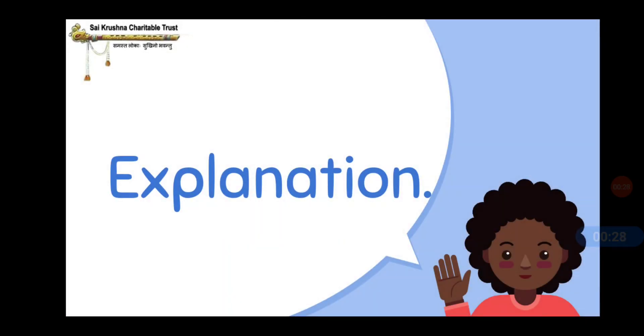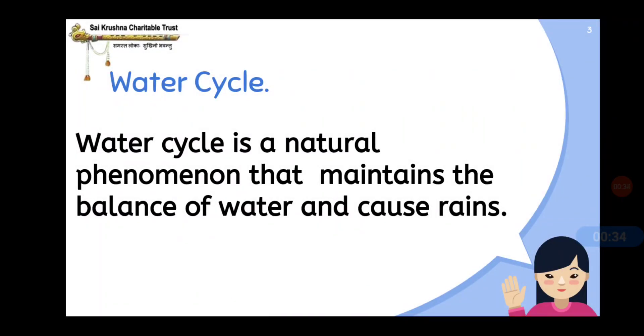In this part, we have the explanation of water cycle. What is water cycle? Water cycle is a natural phenomenon that maintains the balance of water and causes rains. Let us understand the process of water cycle.